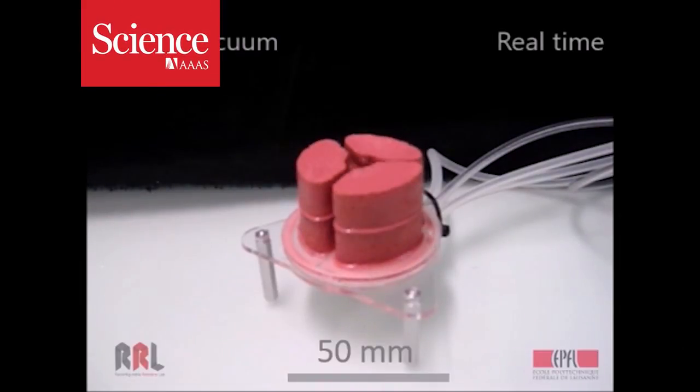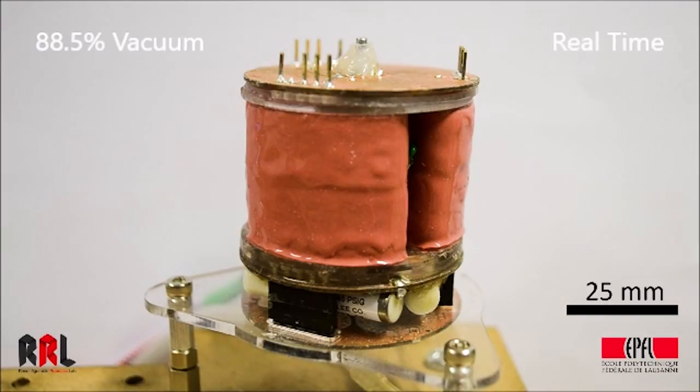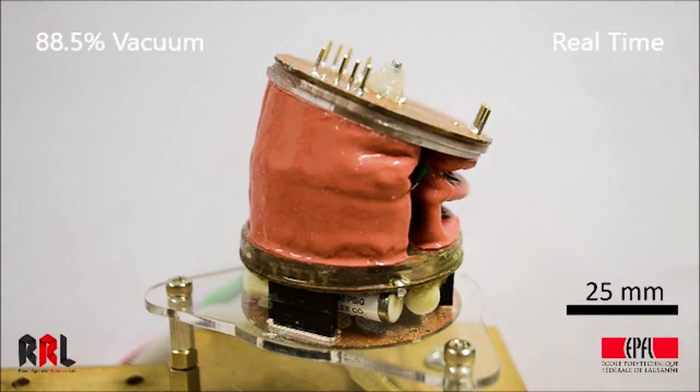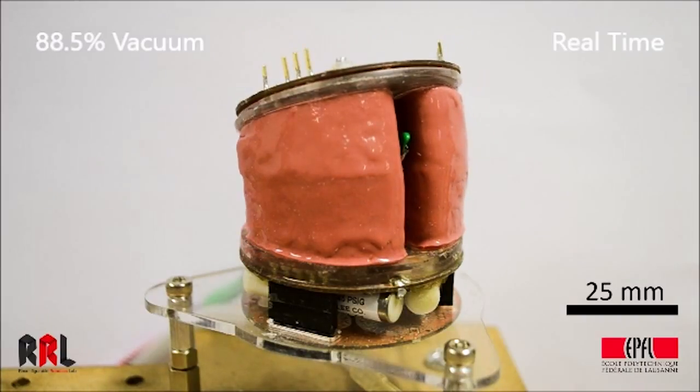This flexible pink robot contains no rigid motors. Each module has three air bladders connected to tubes. The tubes suck air out to make them contract, bending the robot in that direction.